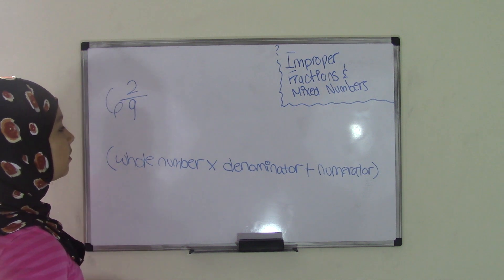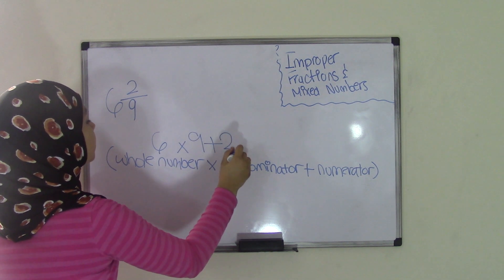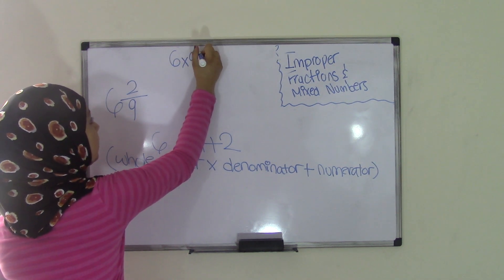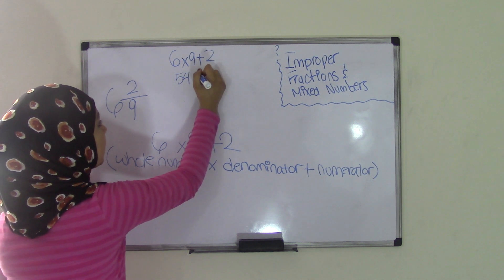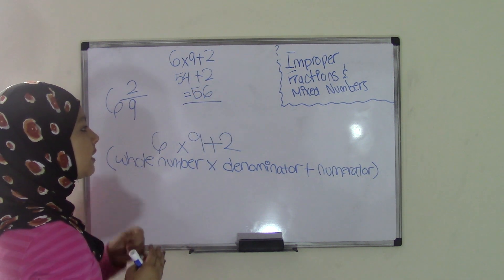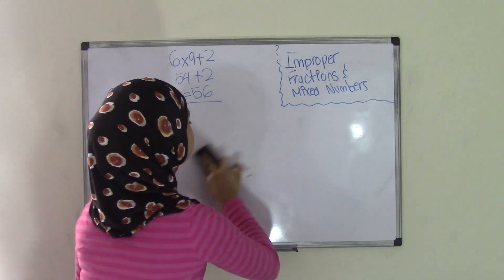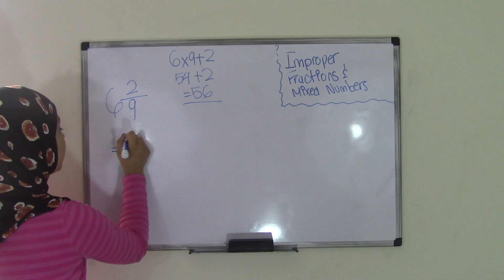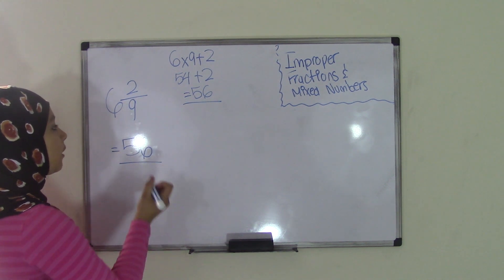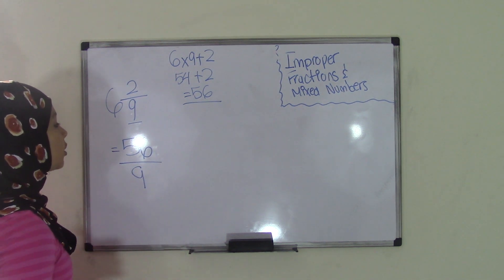That means 6, the whole number, times the denominator which is 9, plus 2, the numerator. So you have 6 times 9 plus 2. We know that 6 times 9 equals 54, plus 2 equals 56. Your answer, which is 56, is always going to become your numerator. So 56 is your numerator, and you keep the denominator as it is. The denominator for 6 and 2 ninths was 9, so 9 stays as your denominator. The improper fraction for 6 and 2 ninths equals 56 over 9.